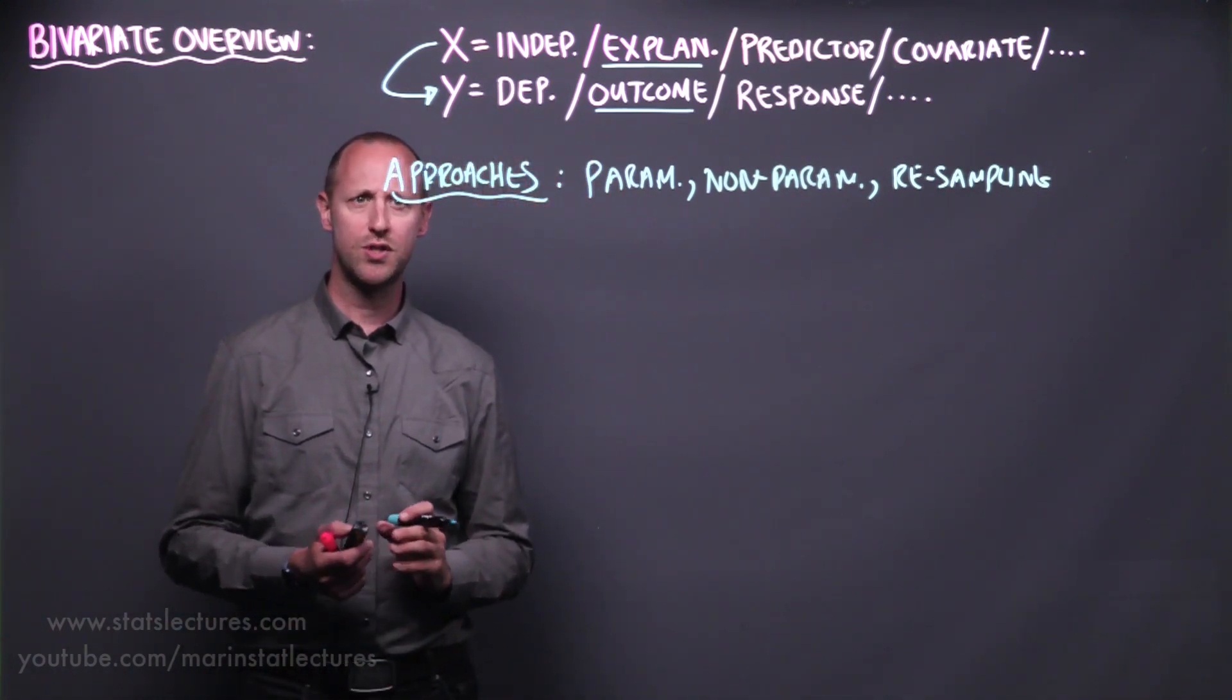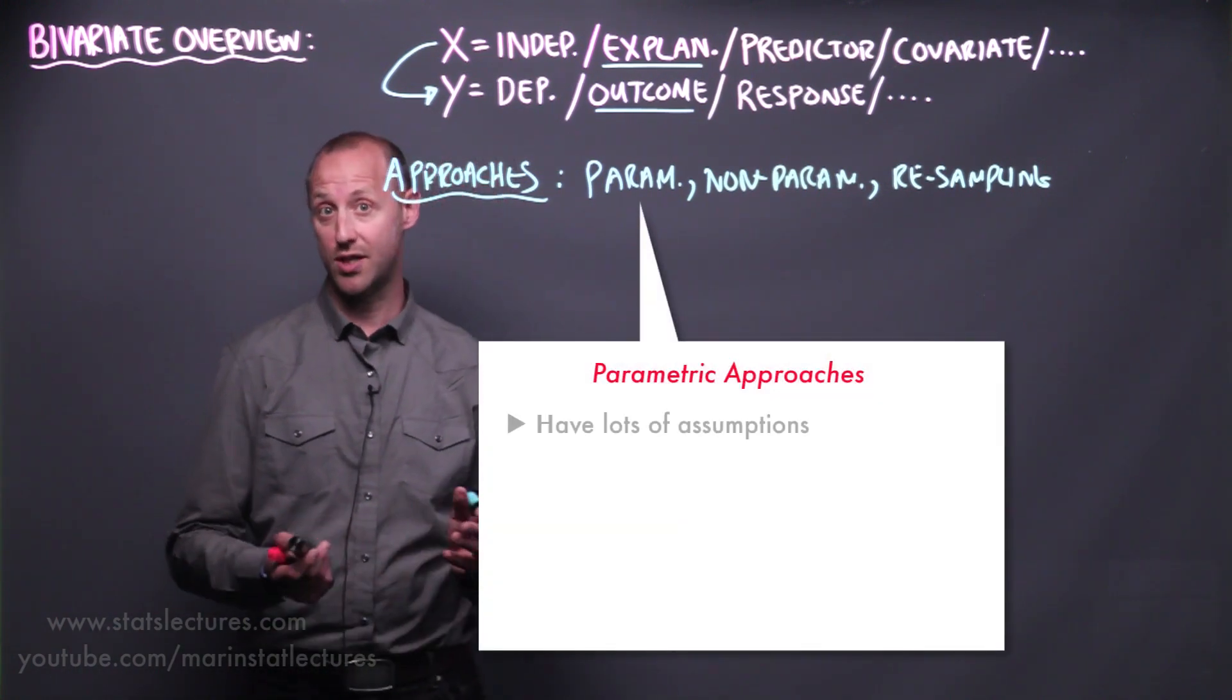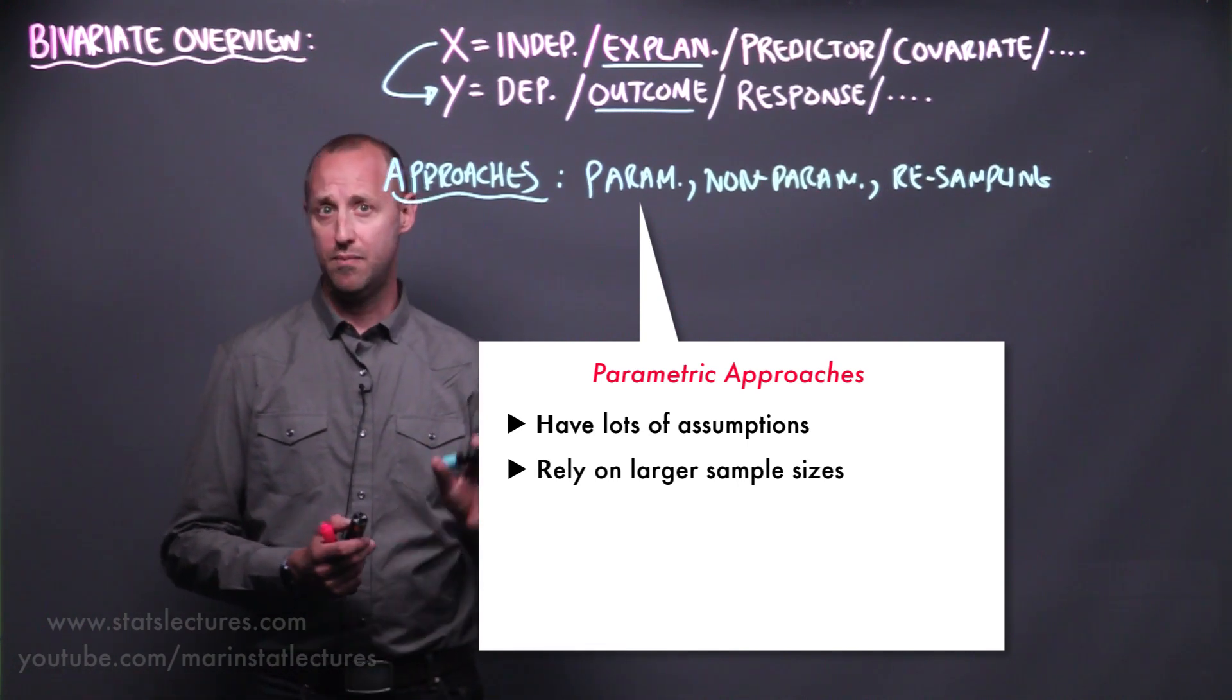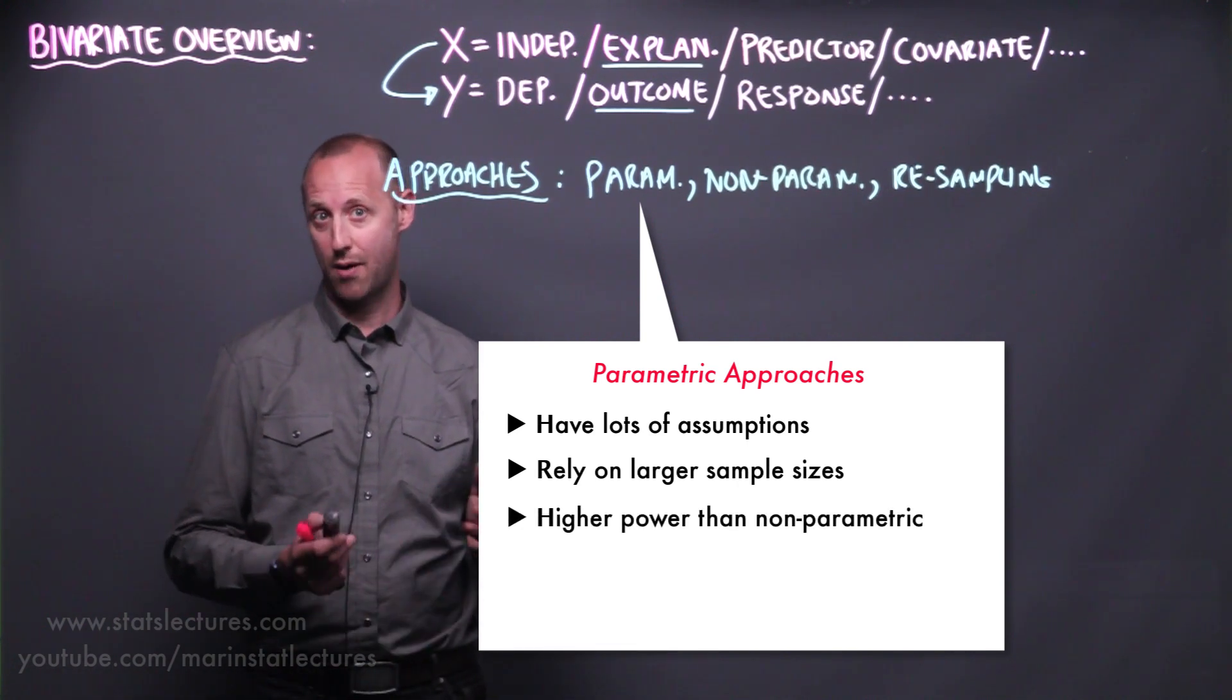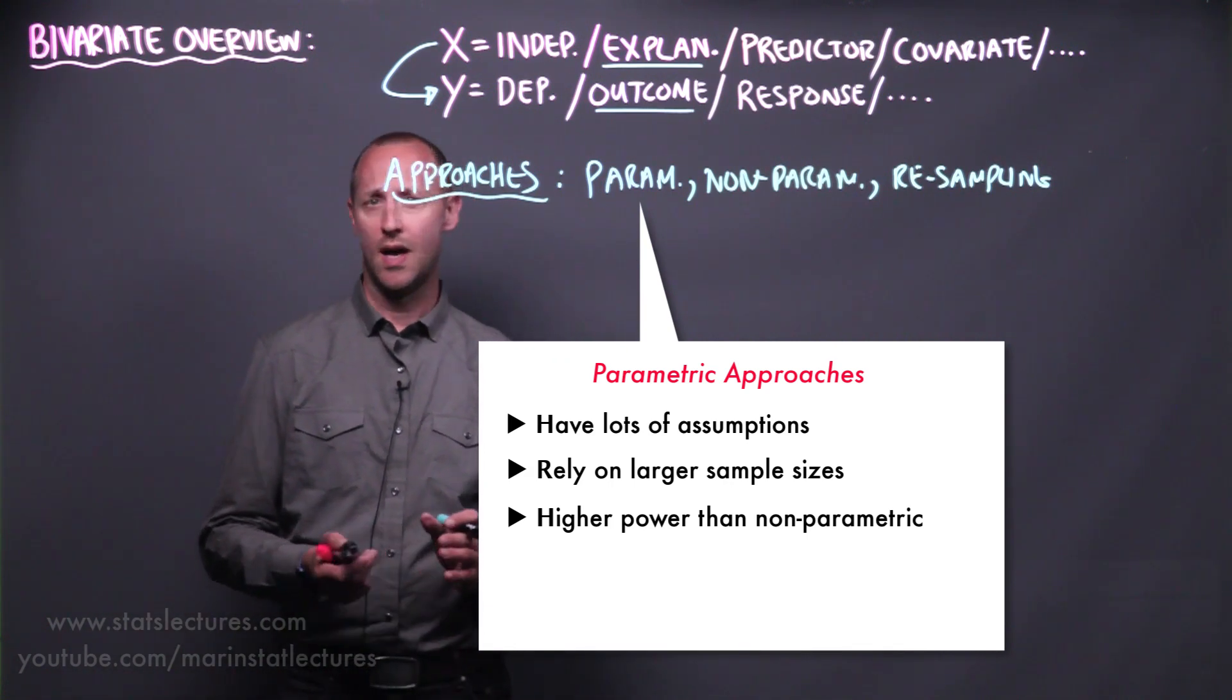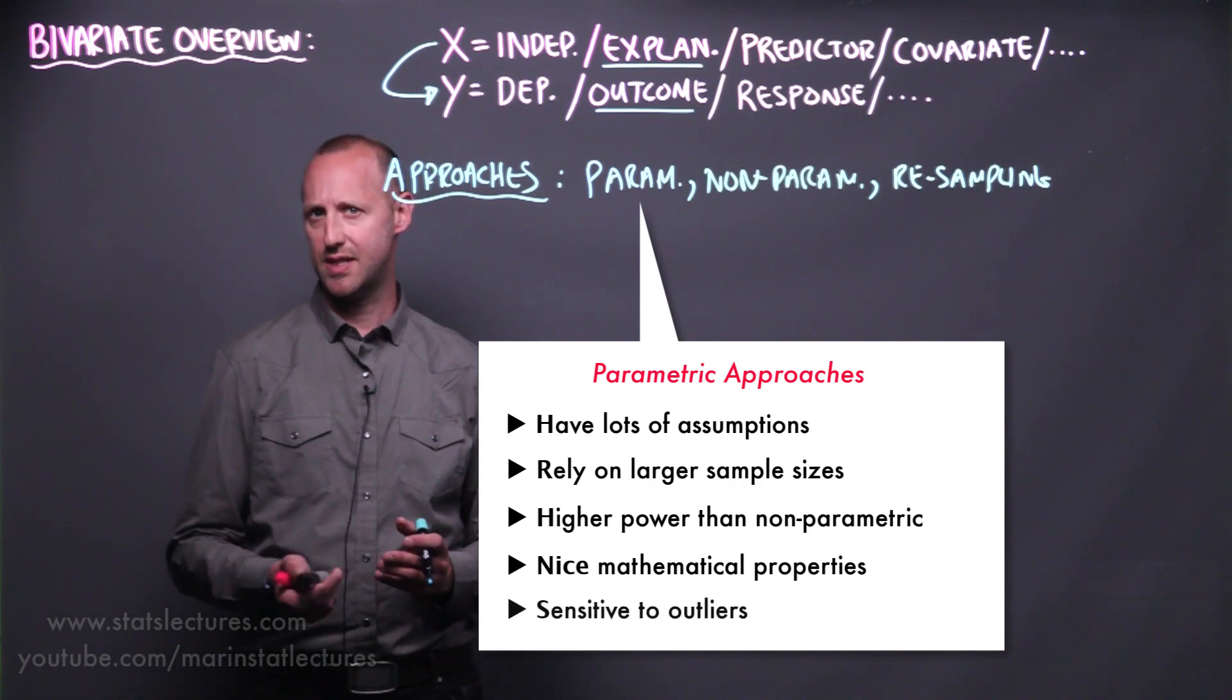There's some pros and cons to each of these. Parametric approaches generally have lots of assumptions. They usually rely on having larger sample sizes. Parametric approaches have a higher power than definitely than non-parametric approaches. They have a lot of nice mathematical properties and they tend to be very sensitive to outliers.